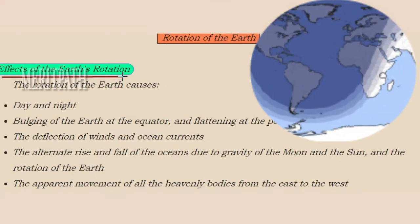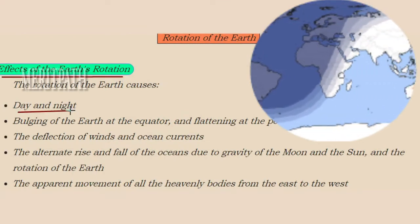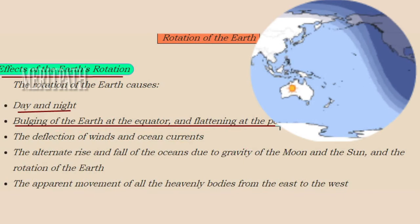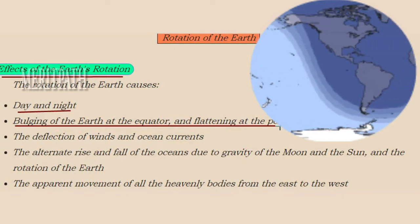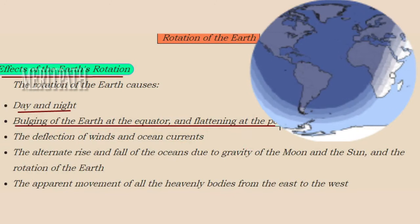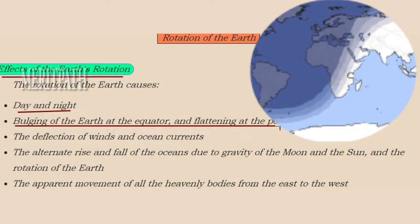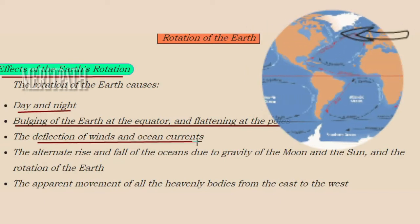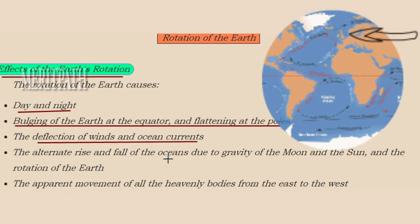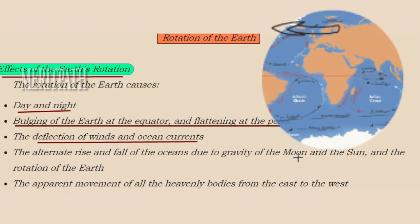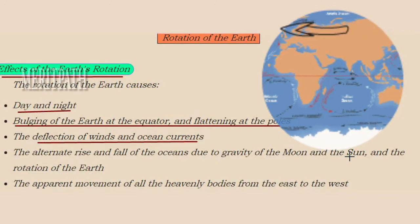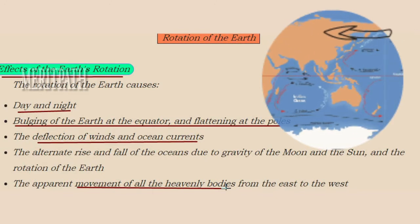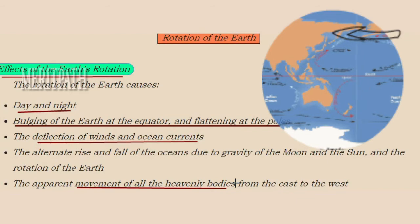Now let's study the effects of earth's rotation. This rotation results in the changing of time from day to night. Rotation is also responsible for the bulging of the earth near the equator and the flattening of the earth at the poles. Earth is spherical but bulged in the middle towards the equator. Ocean currents and deflection of winds are also caused by rotation of the earth. The apparent movement of the sun, stars, and celestial bodies from east to west is also because of earth's rotation.